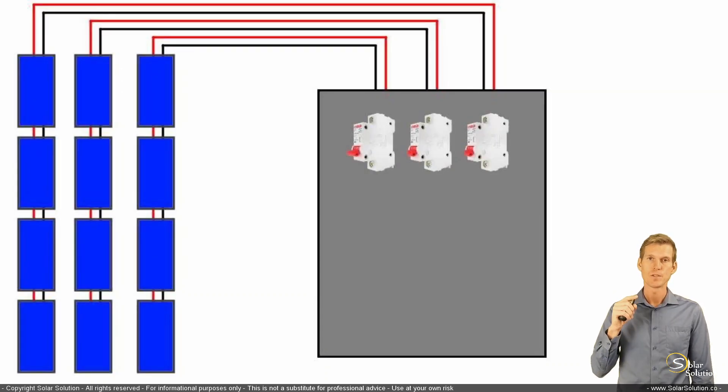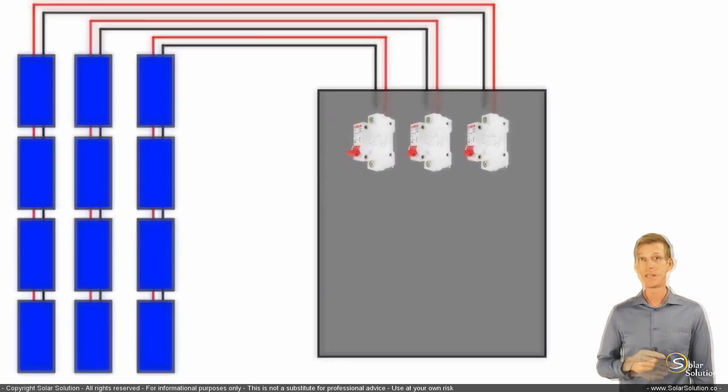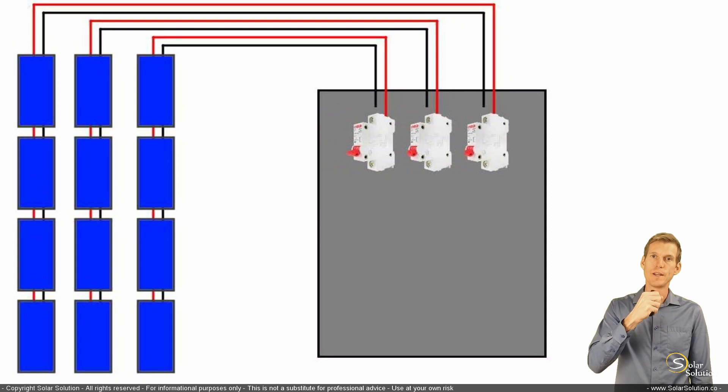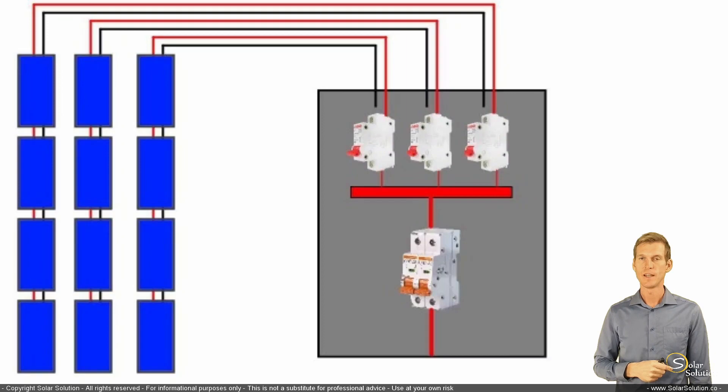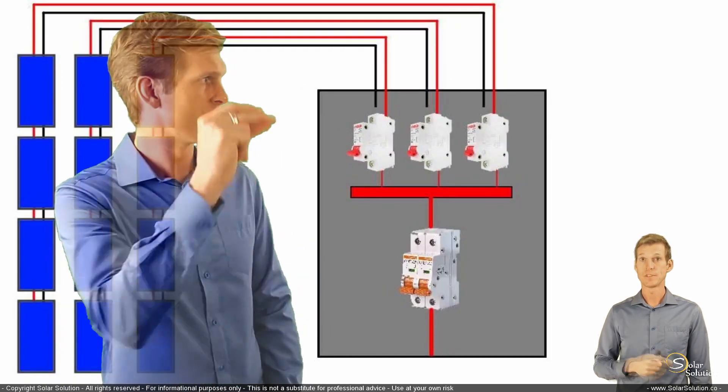Each and every breaker controls one set of modules. Then we group the output from all the breakers together and feed it through another main switch. In this case, it's just a heavy-duty main breaker.